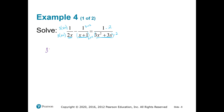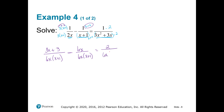If you allow me to distribute, that's going to give you 3x plus 3 over our LCD of 6x times (x plus 1), minus 6x over our common denominator 6x times (x plus 1), equals 2 over common denominator 6x times (x plus 1). I wrote the third denominator in factored form because I want all of these to look exactly the same.